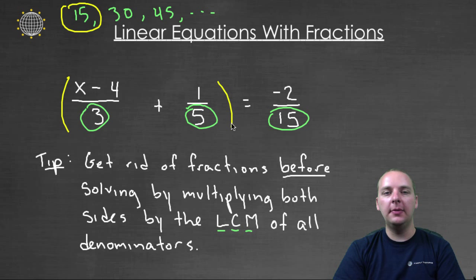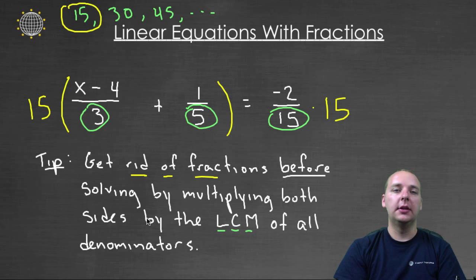So we'll multiply fifteen to the left side of the equation and the right side of the equation, and what that will do is it will get rid of all the fractions that we have, and then we'll have an easier equation to solve.